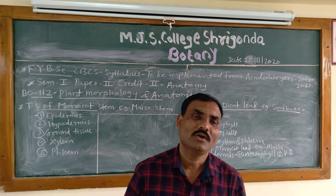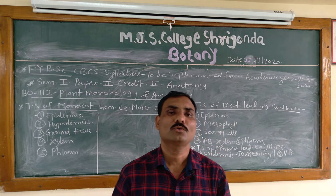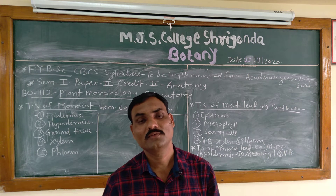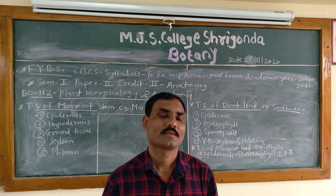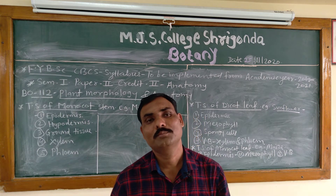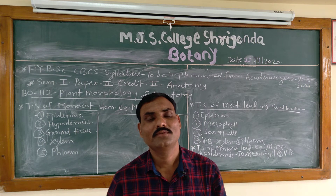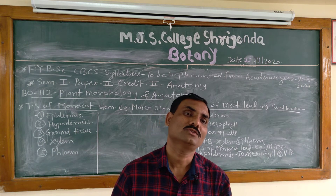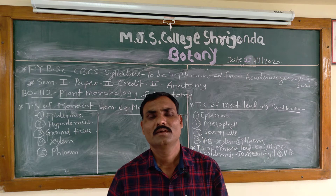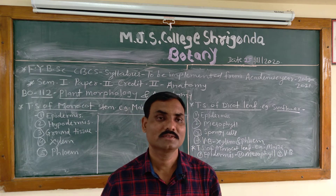In that morphology we completed the morphology of reproductive parts, that is about the flower: types of flower, complete flower, incomplete flower, then different parts of the flower — Calyx, Corolla, Androecium, Gynoecium. In this way we completed Credit 1.